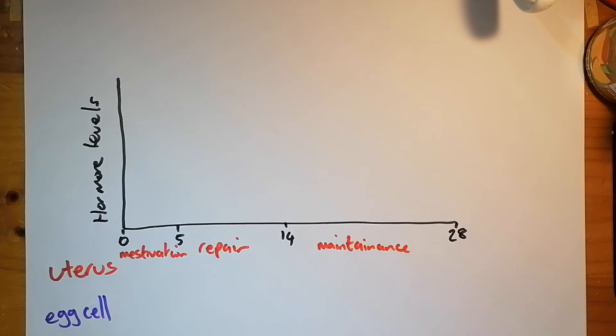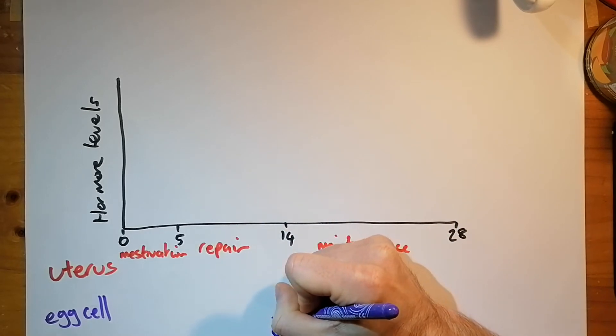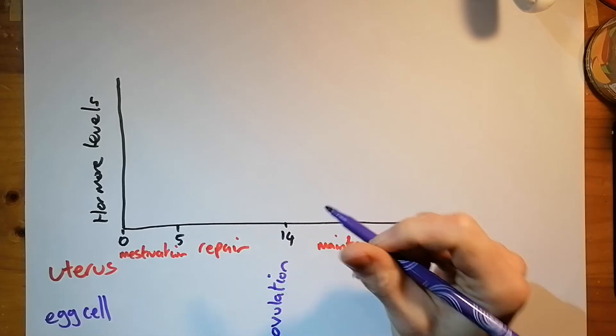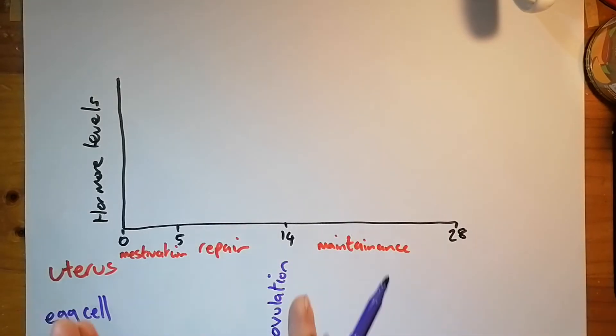Of the uterus lining following ovulation. And just under that, what's happening to the egg cell is on day 14 you get ovulation. At the risk of repeating myself, it's around the middle of the cycle, day 14.